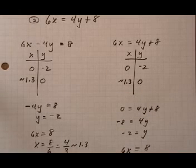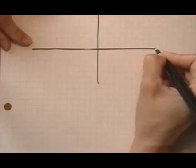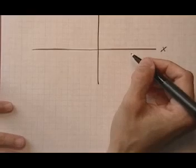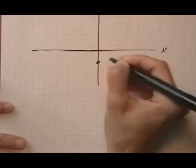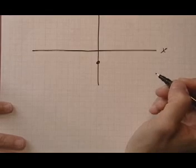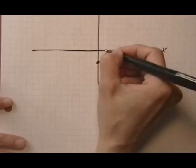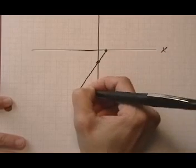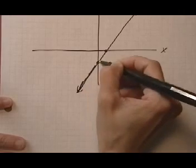They would both end up with the same y value because these are the same line. If we graph them up, get a piece of graph paper here, we're going to get a line that sits right on top of another line. So we have our xy axes. And then for the first line we had zero minus 2, and then approximately 1.3 and zero. 1.3 maybe right there. And zero. So there's our first line. And our second line is right on top of it. It has the exact same points.